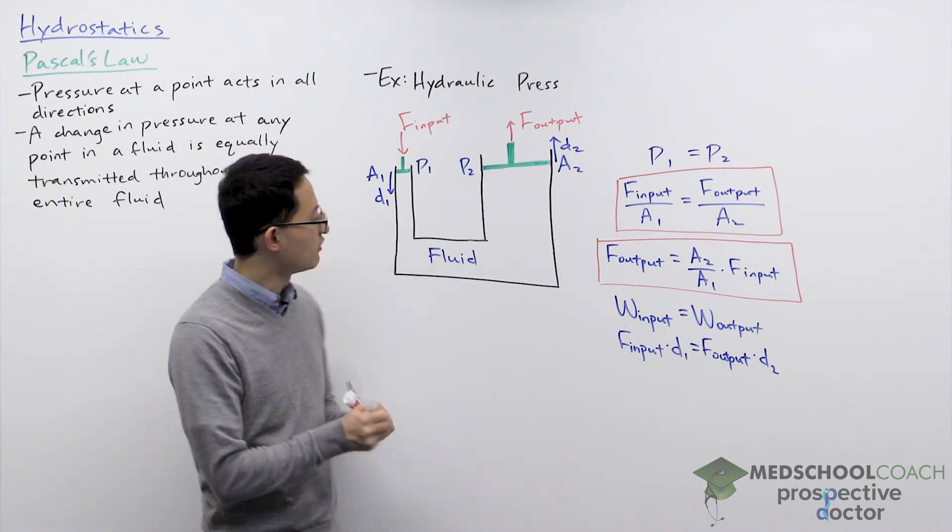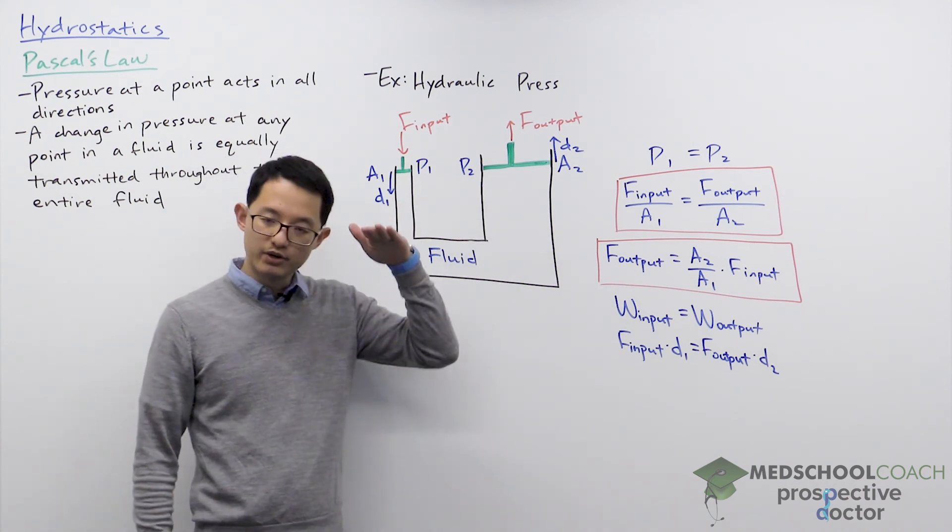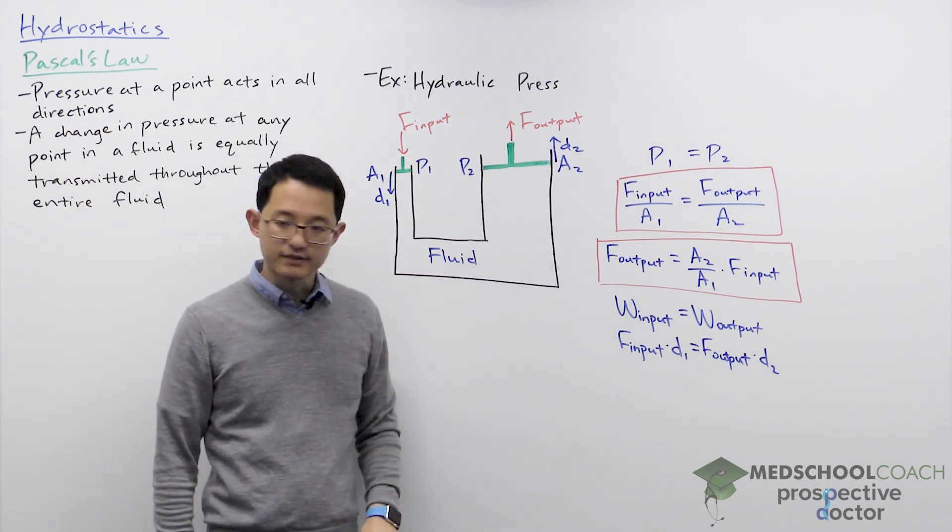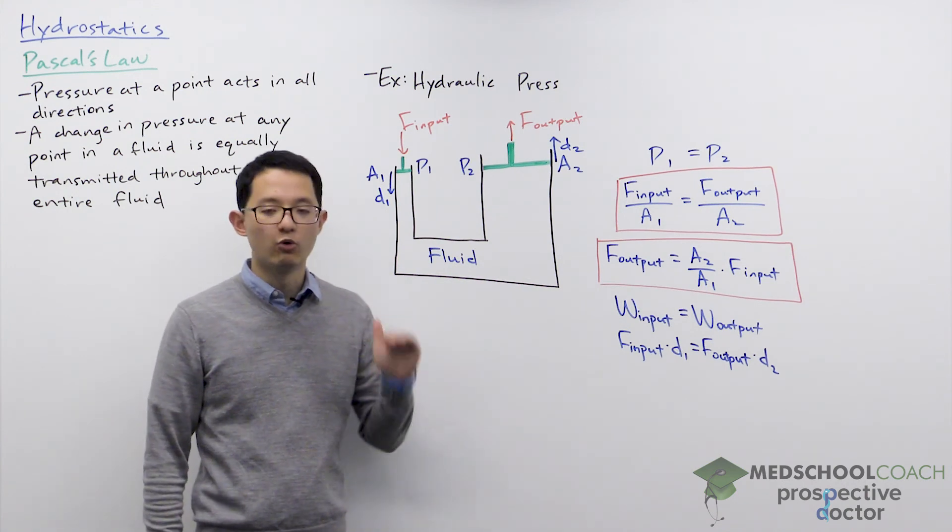So for example, if this piston was four times larger than this piston, if you push down a distance of one meter, the other piston would only move up by a quarter of a meter.